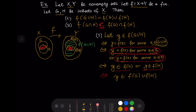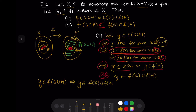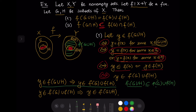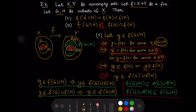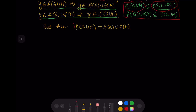All of the statements in this argument are if-and-only-if statements. So we have proven that y in f(G ∪ H) implies y in f(G) ∪ f(H), and conversely y in f(G) ∪ f(H) implies y in f(G ∪ H). The first direction means f(G ∪ H) ⊆ f(G) ∪ f(H), and the second means f(G) ∪ f(H) ⊆ f(G ∪ H). Together these mean the two sets are equal, proving statement one.